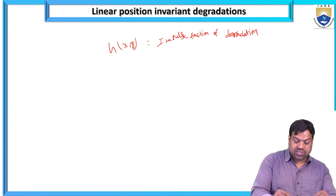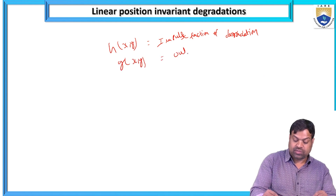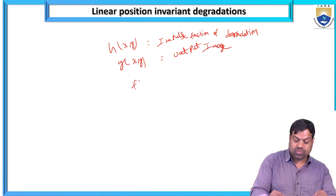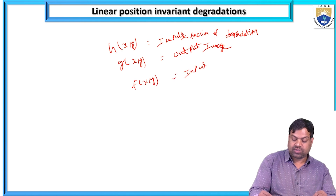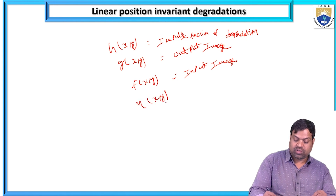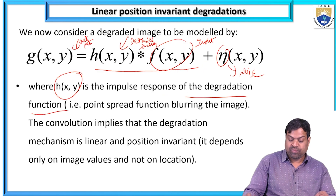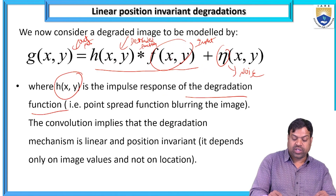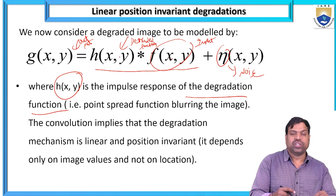Here: G(x,y) is the output image, f(x,y) is the input image, and ν(x,y) is the noise. When noise is added to the input image and we apply the degradation function process, then the output is a noiseless output, that is G(x,y).